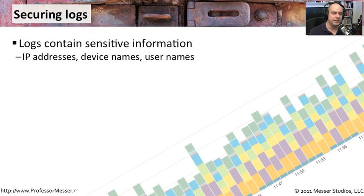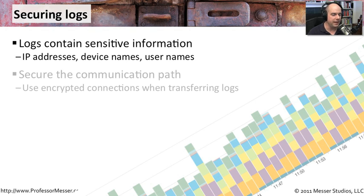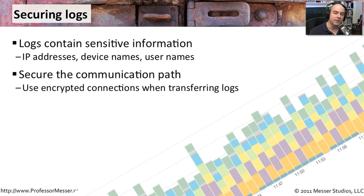These logs contain very sensitive information — IP addresses, usernames, and the types of things occurring in your network — so they are a security concern. Because of that, you want to make them as secure as possible. If there's a way to secure the communications path between the system you're pulling from and the place where your logs are stored, take advantage of that, so that if anyone tapped into that connection and captured packets, they'd have no idea what was inside.